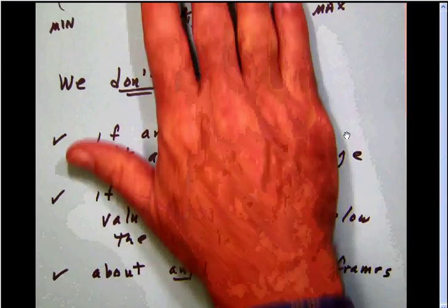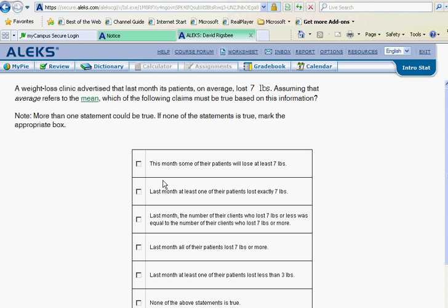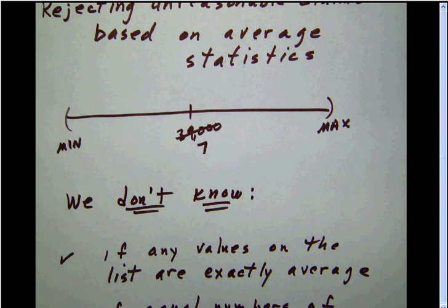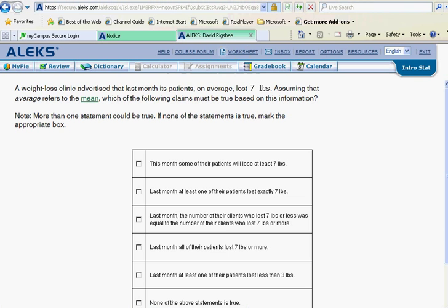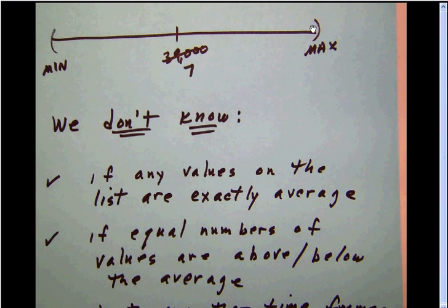We go through our reasoning process as before. If a claim is about this month, skip it — it has nothing to do with last month. Last month at least one lost exactly seven — certainly not, because we don't know if any values are exactly at the average. The number of clients who lost seven pounds or less was equal to those who lost more than seven — we ignore that immediately, because we do not know there are equal numbers above and below the average.